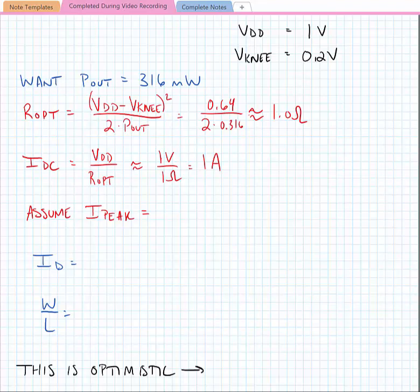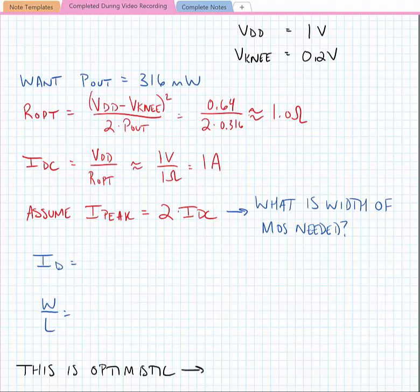We can assume that the peak current is 2 times the DC current. Given this current requirement, we can ask: what is the width of a MOS device that would be needed to provide this current? We know the current at the drain for a MOS device in saturation is given by 1/2 mu-N-C-Ox W over L times VGS minus VTH squared.